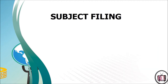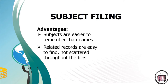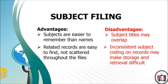In subject filing, the advantages are that subjects are easier to remember than names, and related records are easy to find, not scattered throughout the files. Security is provided because correspondent names are not visible to unauthorized persons who may not know the subject under which a record is filed. The disadvantages are that subject titles and subdivisions may overlap as the list of subject titles grows. Inconsistent subject coding may make storage and retrieval difficult. Users may not remember exact titles or may be unfamiliar with them. Planning and maintenance are required to assure that approved subject titles are used consistently. It is the most expensive storage method because experienced filers are required.